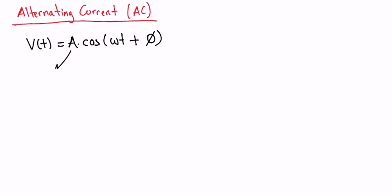Okay, so here A is the amplitude and this omega is the angular frequency in radians per second and this phi is the phase angle.